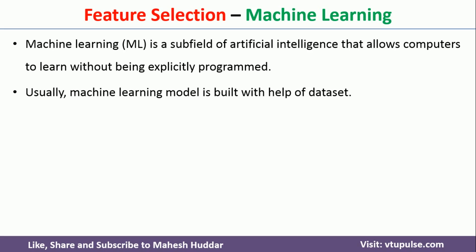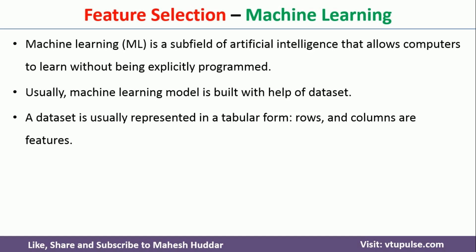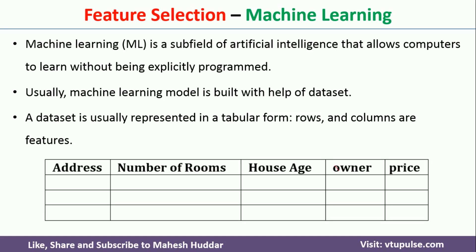Usually a machine learning model is built with the help of a dataset. A dataset is usually represented in the form of a table with rows and columns. The rows represent the examples and the columns represent the features — or you can say attributes or input variables. In this example, you can see the last column is the price, which is what we want to predict for a particular house given some features.